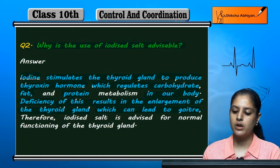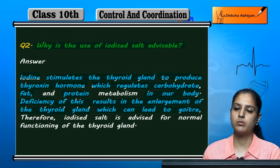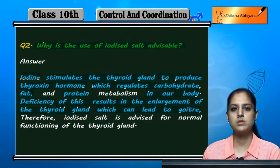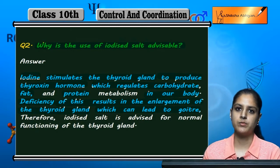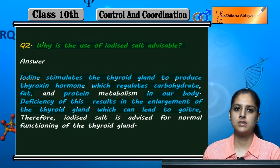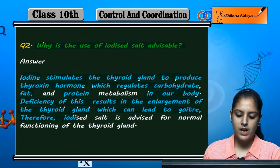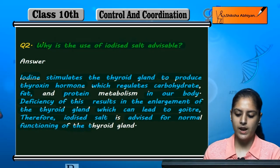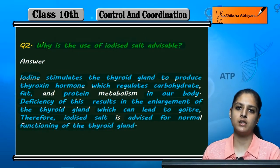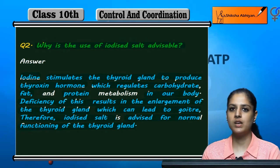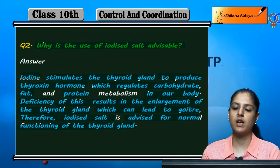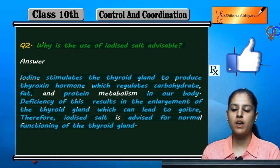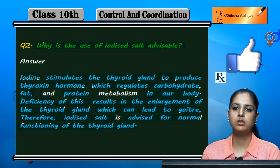Due to iodine deficiency, thyroxin hormone is not secreted, and the metabolism of carbohydrates, fats, and proteins is disrupted. The thyroid gland enlarges and results in a disease called goiter. That is why iodized salt is advisable — so that the thyroid gland functions normally, iodine intake remains normal, and thyroxin is released properly.